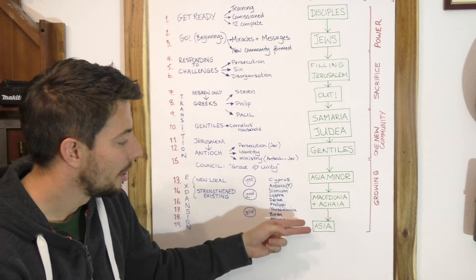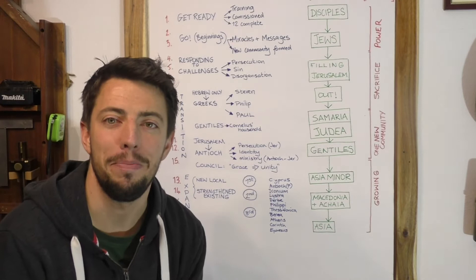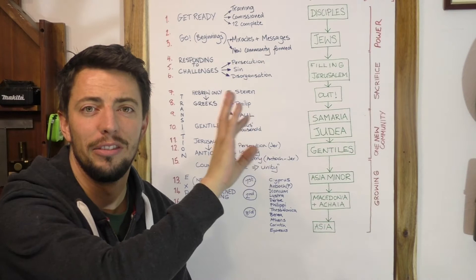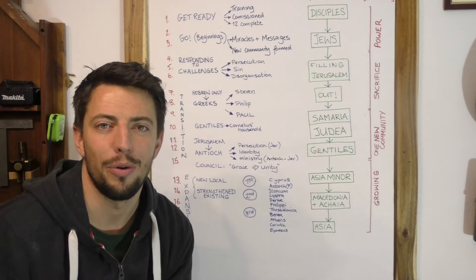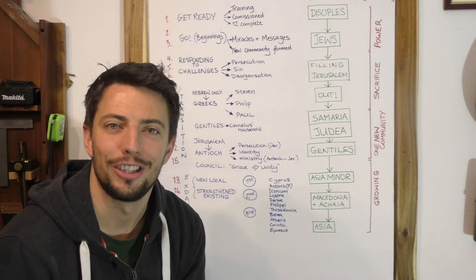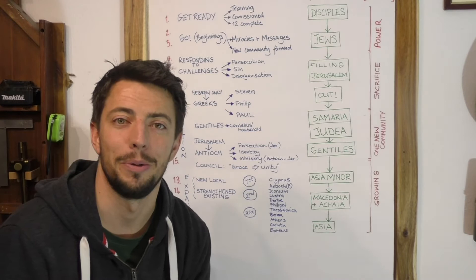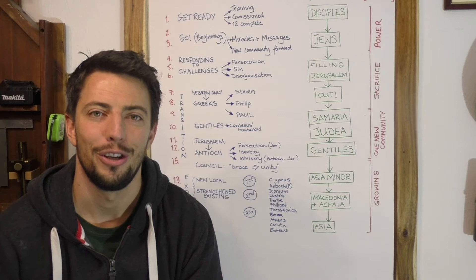When you consider the vast array of different people who are affected, we have proconsuls, leaders, rulers in the Roman system, but then you have slave girls, you have businesswomen and jailers, you have synagogue leaders, you have elites in Athens, but then you have the simple townsfolk on the frontier in Derbe. All these different people have come the same way to be part of this one organization, the church. Somebody in the next chapter is going to comment how the whole world has been turned upside down.